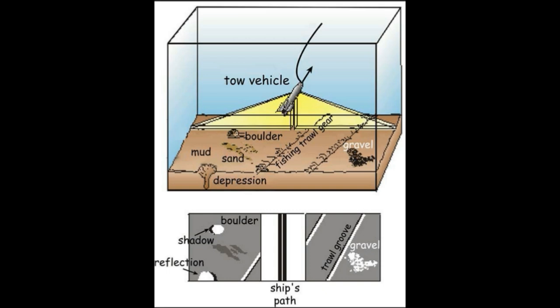Side-scan sonars provide range and amplitude for each sample in a ping. We know the location of the first sample in a ping, but we're forced to assume a flat seafloor to estimate the locations of each sample on either side of nadir.